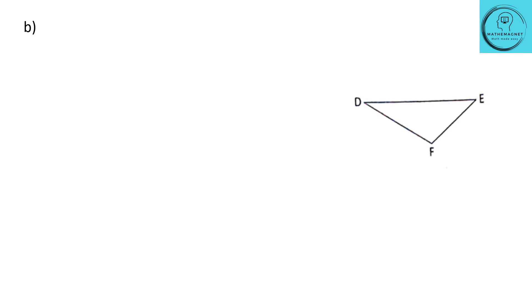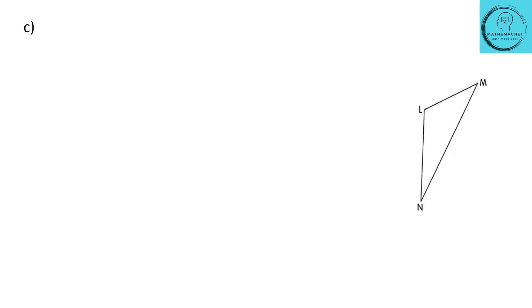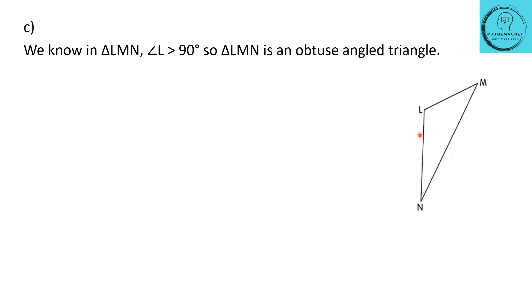Question B: they have given us triangle DEF. In triangle DEF, angle F is greater than 90 degrees. It is evident that it is not a right angle but an obtuse angle, so this is an obtuse-angled triangle. Question C: they have given us triangle LMN. Angle L is obviously an obtuse angle — it is greater than 90 degrees. So since angle L is greater than 90 degrees, triangle LMN is also an obtuse-angled triangle.